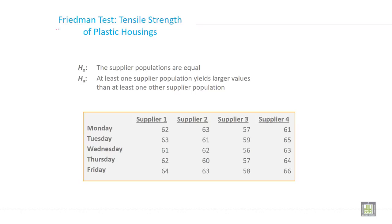So this is a previous example, tensile strength of plastic housing. The null hypothesis in this case will be the supplier populations are equal, and at least one supplier population yields larger values than at least one other supplier population.